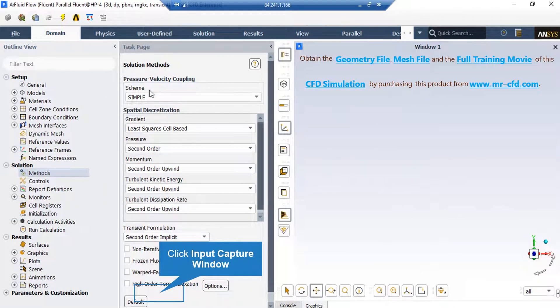After double clicking on the method, you will see that a new window will appear showing you the pressure velocity coupling and the spatial discretization methods.